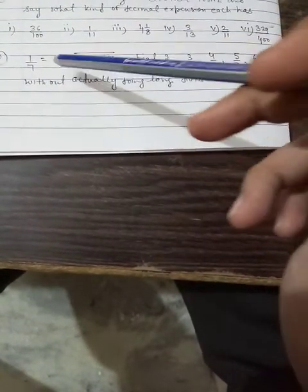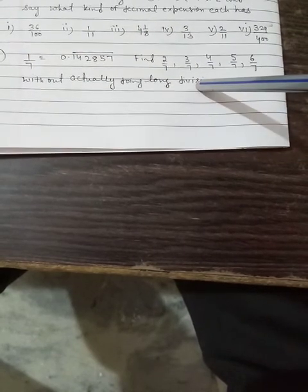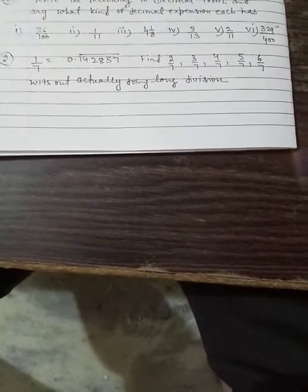Question number 2: 1 by 7 is equal to 0.142857. Find 2 by 7, 3 by 7, 4 by 7, 5 by 7, 6 by 7 without actually doing long division. 1 by 7 की value हमें दी हुई है. We need to find 2 by 7, 3 by 7, etc., without doing long division. If you multiply 1 by 7 by 2, the entire term gets multiplied by 2 and you get 2 by 7. Similarly, you will get 3 by 7, 4 by 7, 5 by 7, and 6 by 7. This is very simple, you can do it yourself.